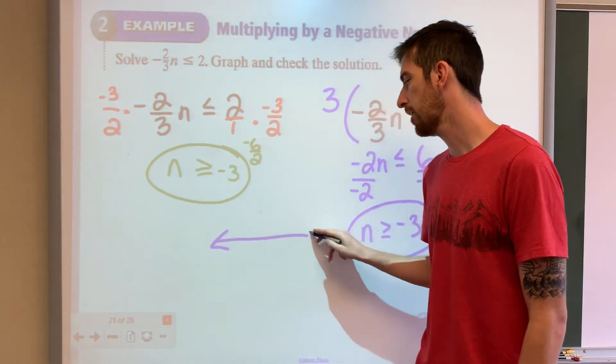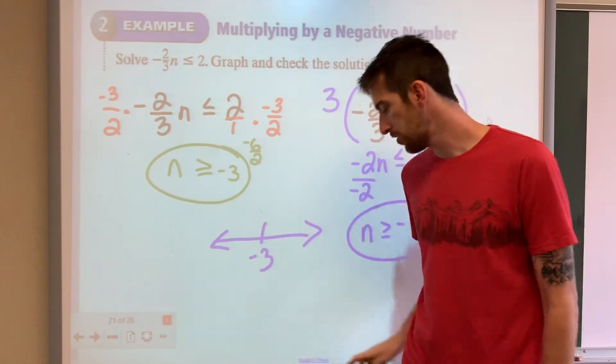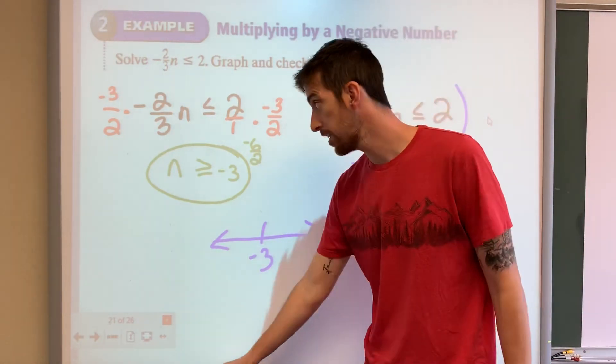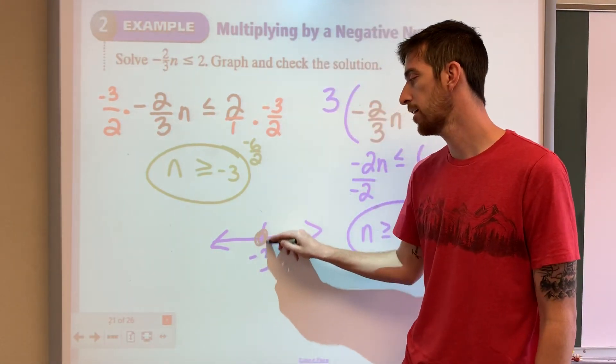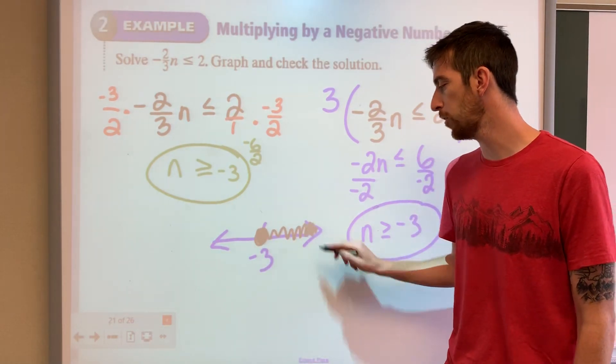Then we've got to chuck that on a number line. Greater than or equal to. Solid dot. Shaded to the right. If the letter is first, then follow the arrow.